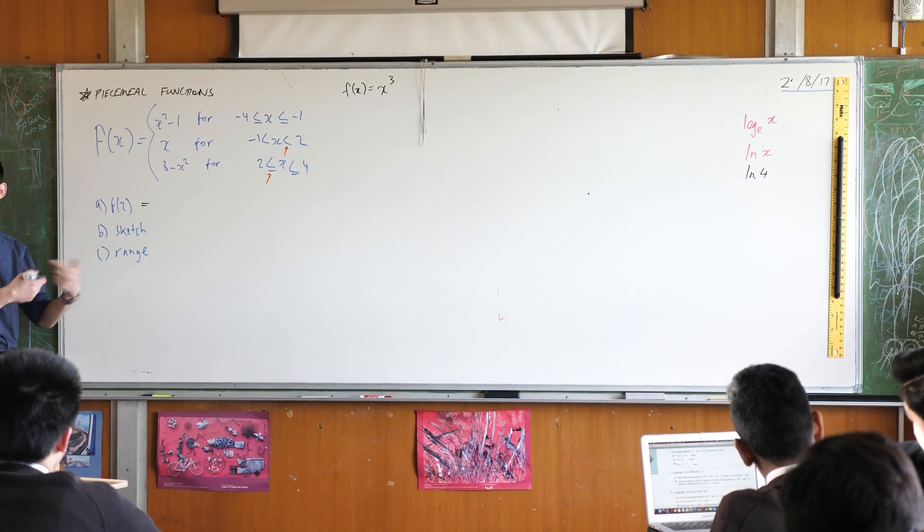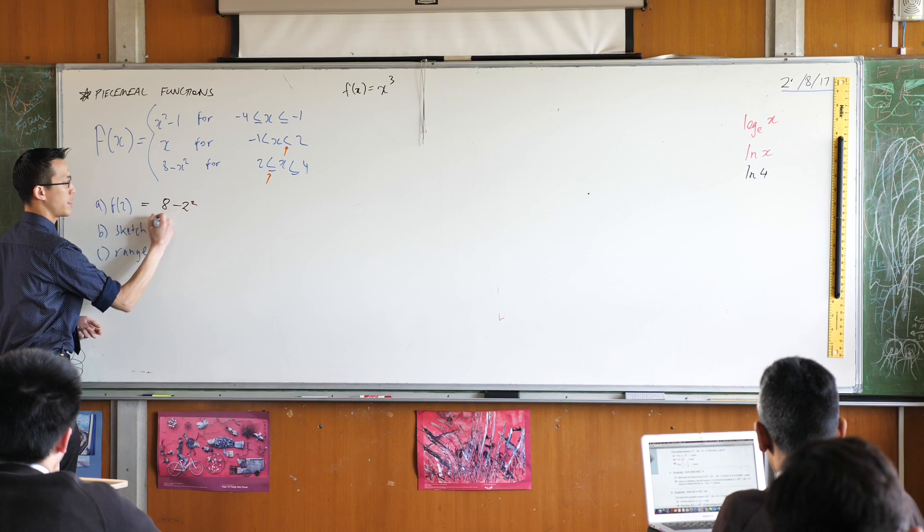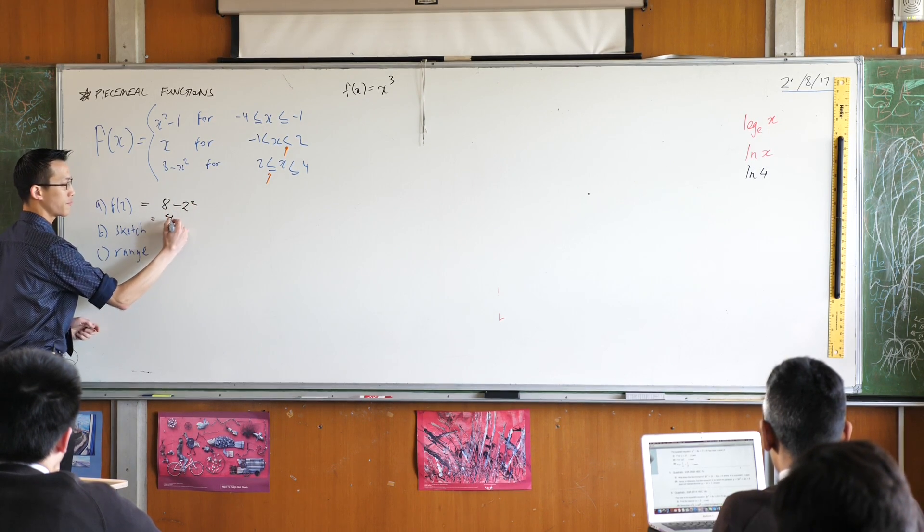So I'm going to just do the substitution. This is 8 minus 2 squared, which is 8 minus 4, which is 4.